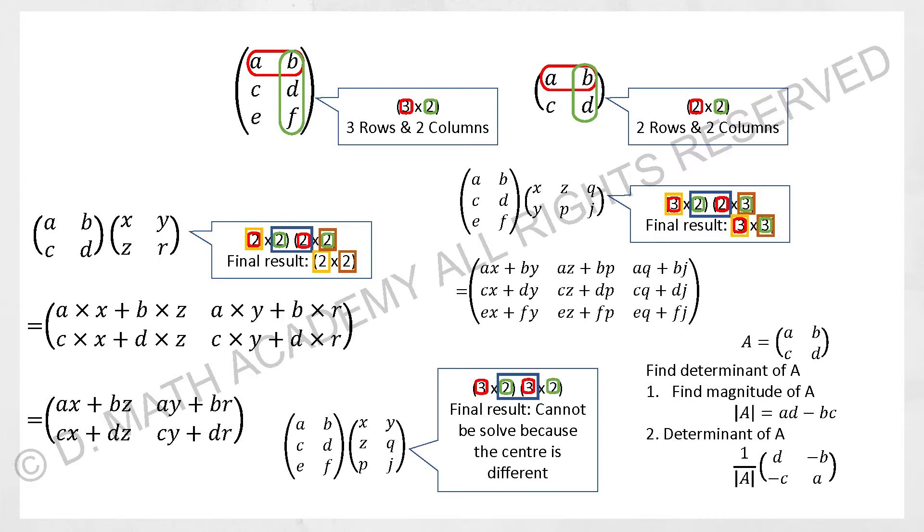So over there, we have two examples. So A, B, C, D and X, Y, Z, R, you are able to run the calculation because they are two rows and two columns, and those one at the center is the same. So your final results will be two times two matrices.